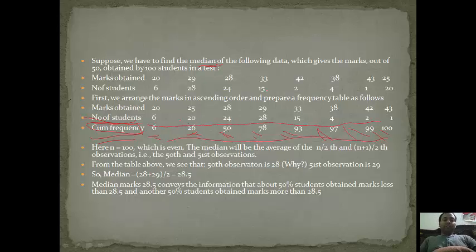Here n equals 100, which is even. We know that the median will be the mean of the (100/2)th and (100+1)/2th observations, that is 50th and 51st observations. The 50th observation is 28, and the 51st observation will fall in 29. So the median will be (28 + 29)/2, that is 28.5. So this will be the answer.